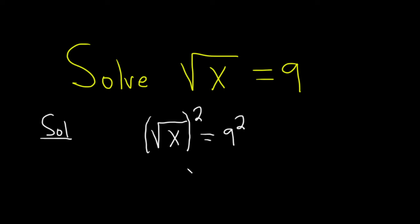When you square the square root, it goes away. So you get x. And then here we get 9 squared, which is the same thing as 9 times 9, which is 81. And so in this case, we get 81 as the answer.